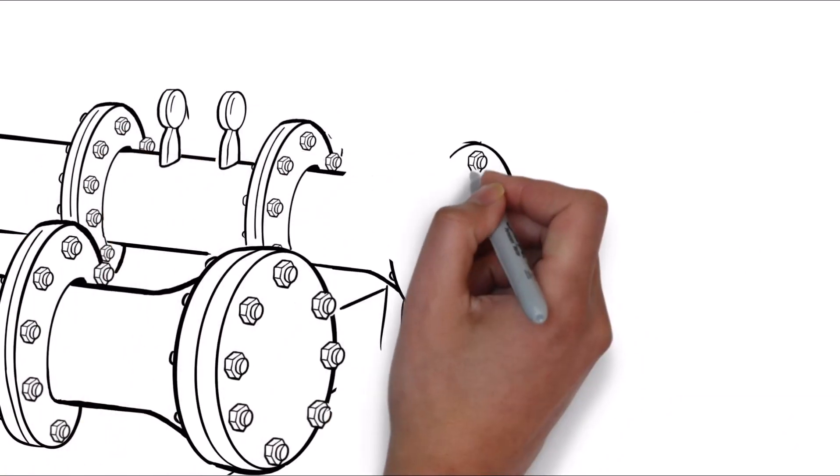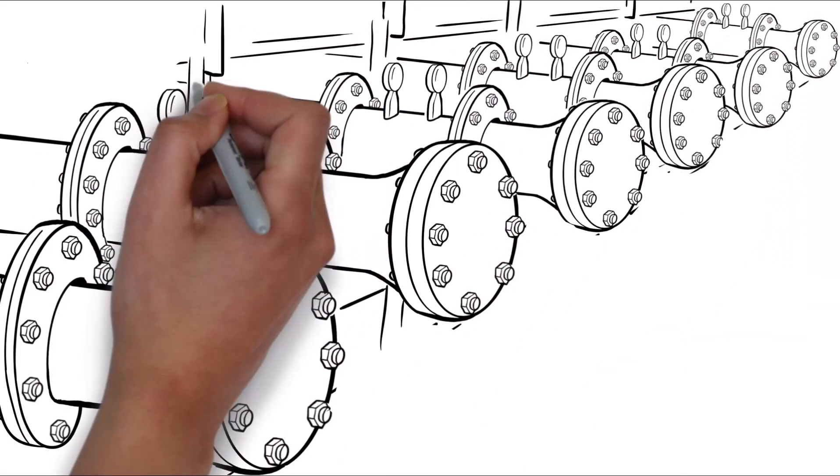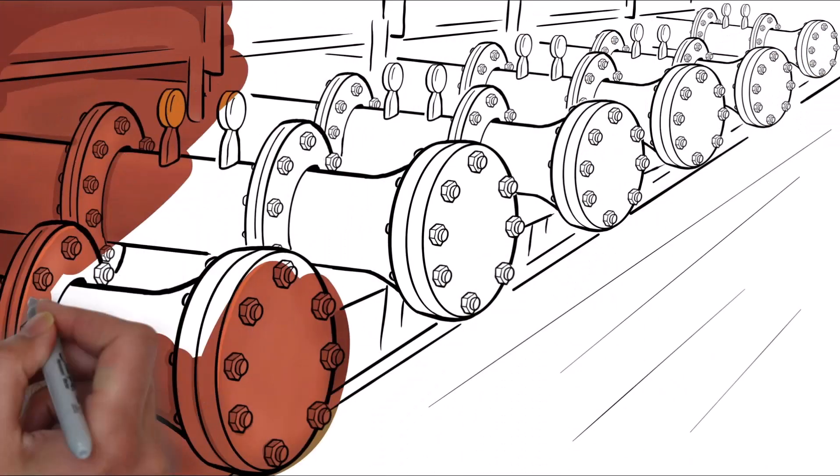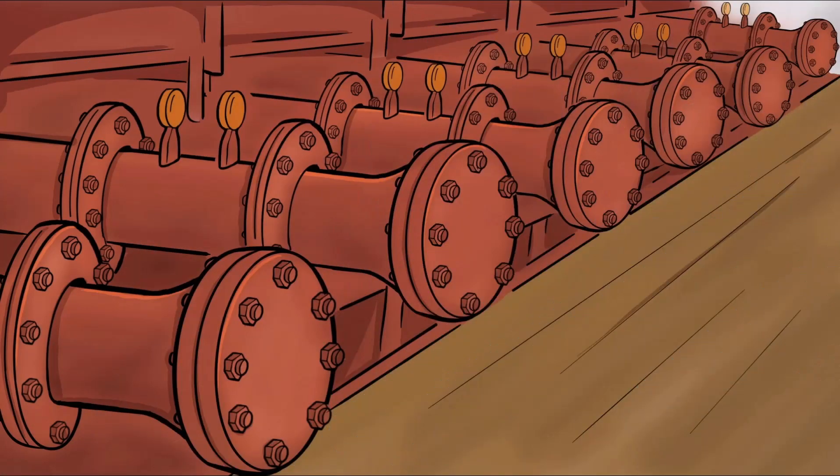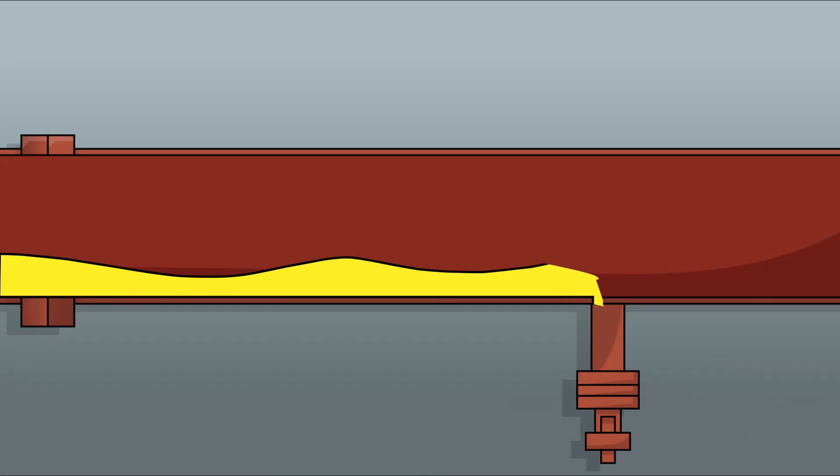The manifold sample is the most significant sample. The manifold is the point at which the custody of the cargo passes from the terminal to the vessel. This sample represents the condition of the cargo that the vessel is receiving. Once the first flow of the cargo is received at the manifold, take the manifold sample.